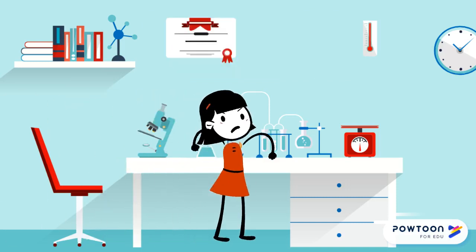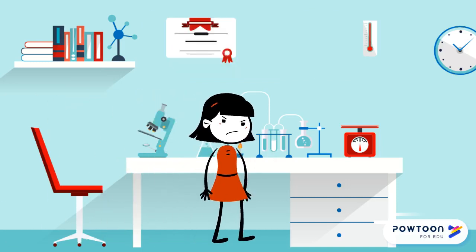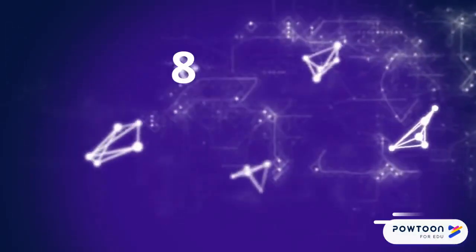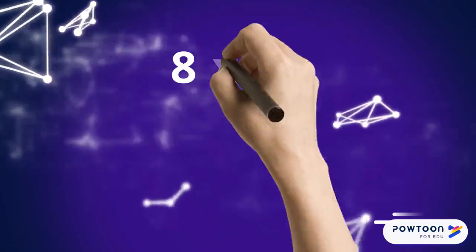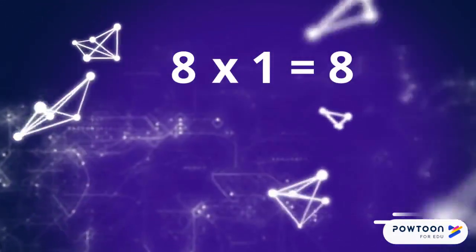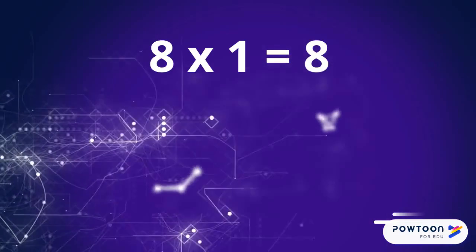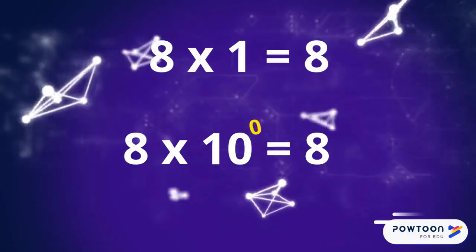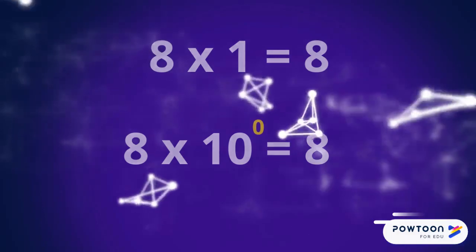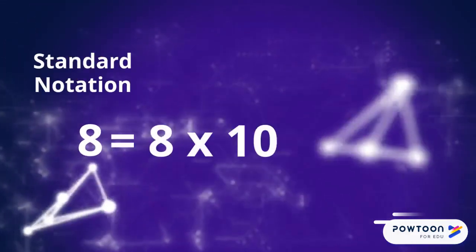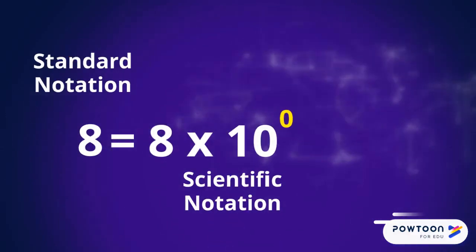If you're watching this video, you need help with this concept, so let's start slowly. Pick a number from 1 to 9. 8 times 1 is still 8. We can replace the 1 with 10 to the power of 0, because anything raised to the power of 0 is 1. So the number 8 in scientific notation is 8 times 10 to the 0.